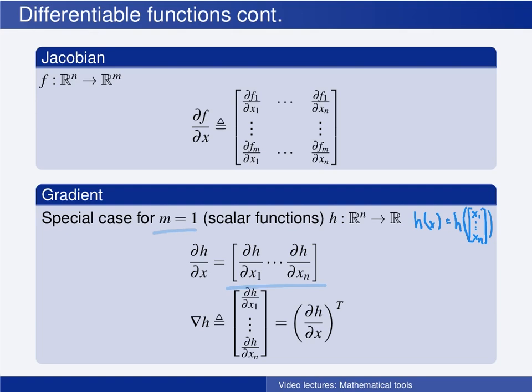Sometimes we will work with a transpose of this. We then get a column vector instead. And this column vector is called the gradient of the scalar function.